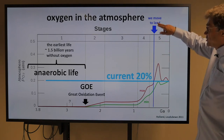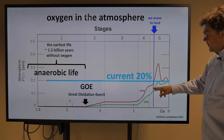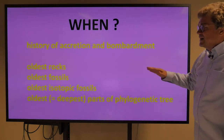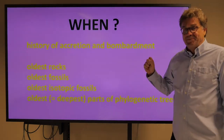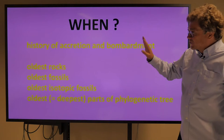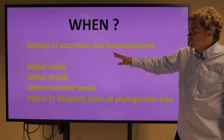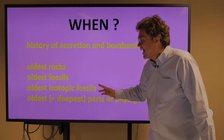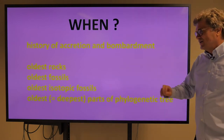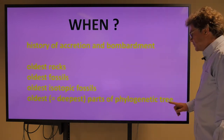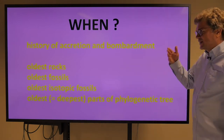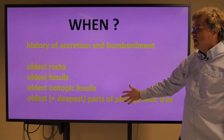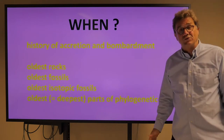Our ancestors moved to land about 400 million years ago. So, when discussing when life originated, we're going to look at the history of accretion and bombardment, the oldest rocks, the oldest fossils, the oldest isotopic fossils, and the oldest and deepest parts of the phylogenetic tree. We can approach this question of when based on a lot of different evidence.